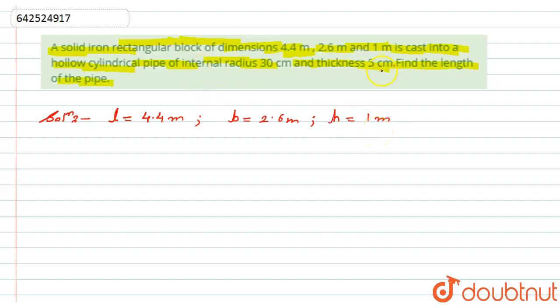Now, this rectangular block is cast into a hollow cylindrical pipe of internal radius 30 cm and thickness. What does thickness mean? Maybe this pipe will look like this. So generally the thickness means this length is given to us, that is 5 cm.